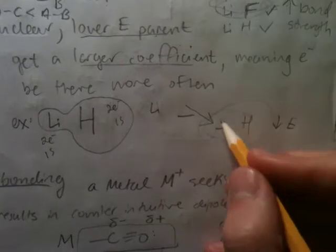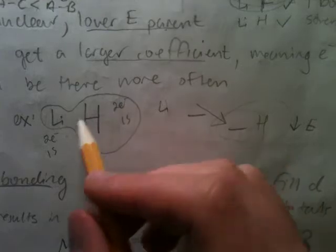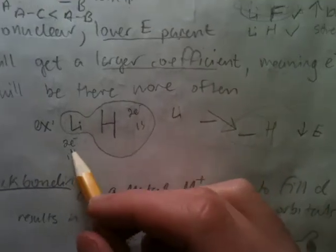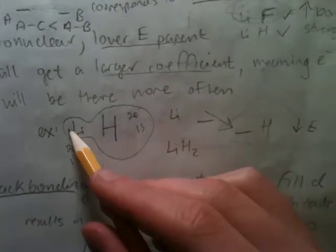The electrons from lithium will want to go down to fill these states. Even though they both have two electrons, this is what it actually looks like. More of them will be going — as you can see here, you can imagine this being the electron density — more dense on the hydrogen side, even though both of them have two electrons in a 1s configuration.